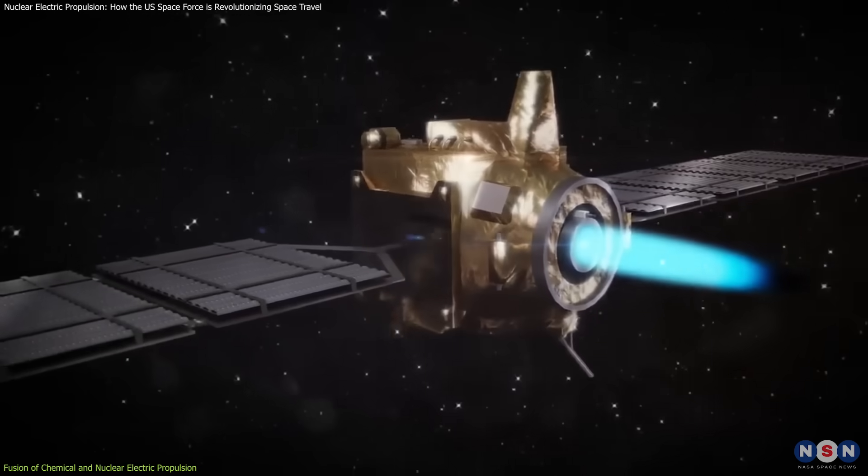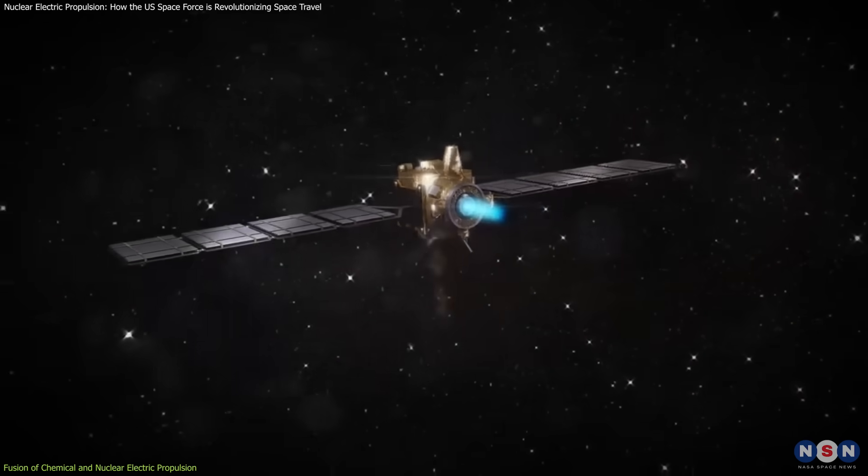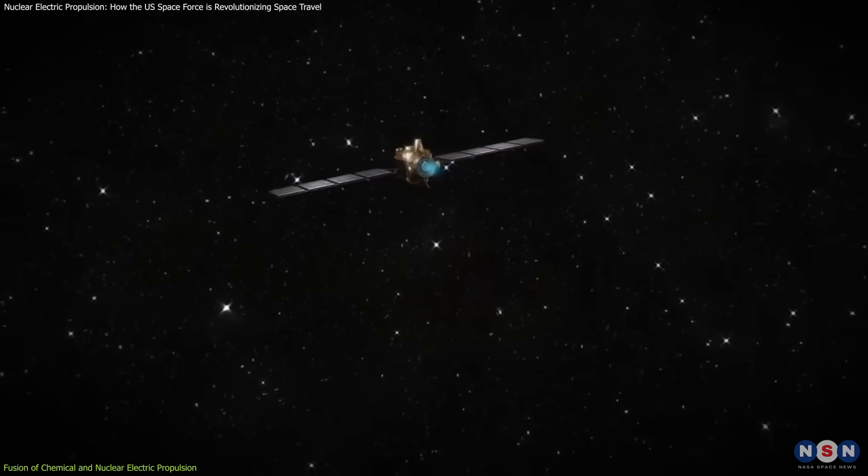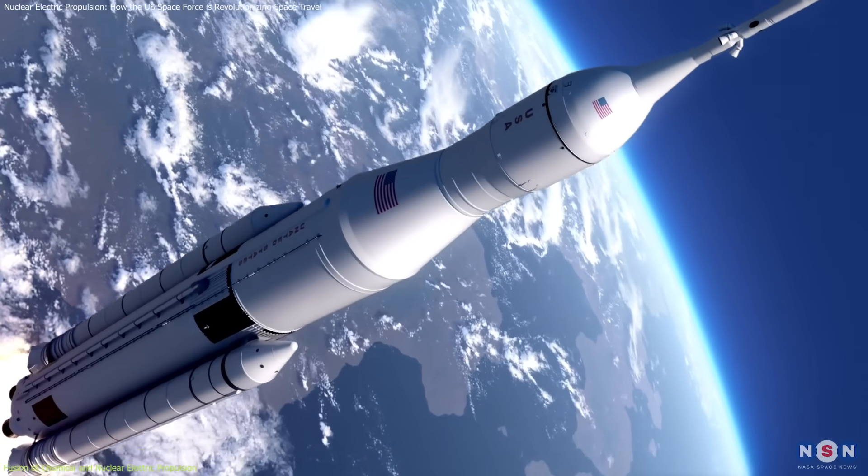However, electric propulsion systems typically generate much lower thrust, requiring longer periods to achieve the same speed that a chemical rocket could reach quickly.